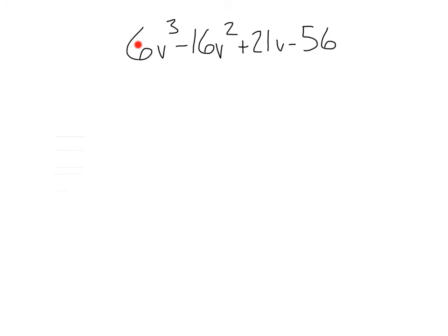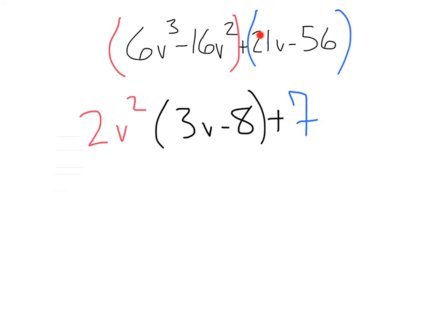Let's try this one. I see four terms, so I know I'm going to group. First group of two, second group of two. Now, let's see what we can do with distribution. The 6v³ and the 16v² has a 2v² in common, leaving us with 3v minus 8. Now, this 21 and 56 have a 7 in common, and that's going to leave us with 3v minus 8.